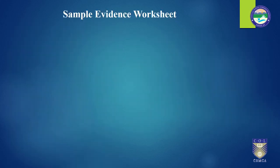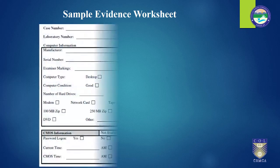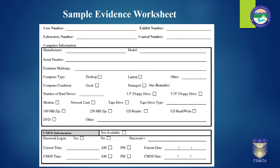A sample evidence worksheet can also be used, where you write a case number, exhibit number, lab number, control number, date and time, manufacturer, model, and serial number if it was a computer, along with examiner markings — color, code, model, make — whether it is a desktop or laptop, the condition of the system, whether it is good or damaged, number of drives, number of floppy drives, USB drives, modem, network cards, tape, zip drives, CDs, DVDs. Whether it has a CD or DVD drive might indicate further evidence to look into. And then CMOS — whether it has a login or not, the current time, CMOS date, time, and version. All sorts of details are compiled in a very simple evidence worksheet.